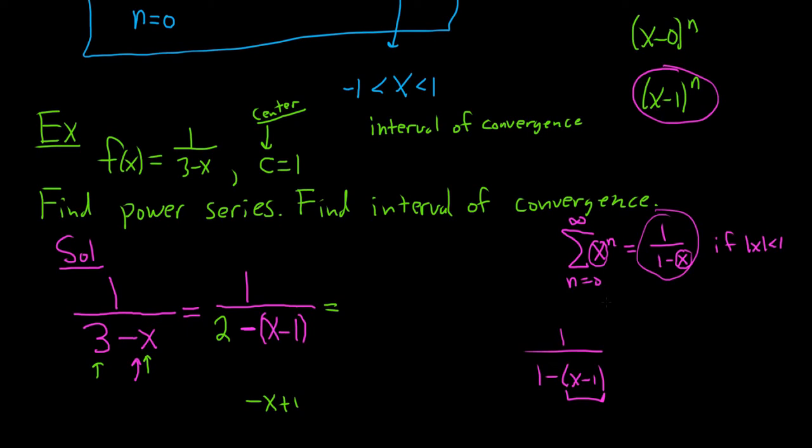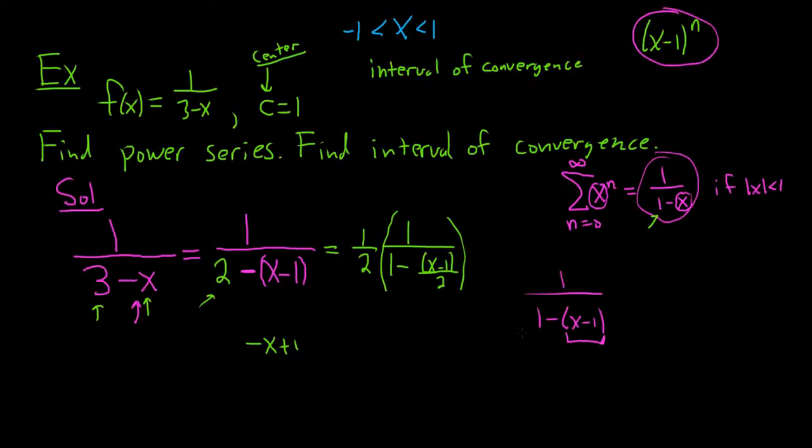So now you'll notice that there's a 2 here. In the formula, we have a 1. So what you do is you pull out the 2 on the bottom. So now you have 1 over 1 minus, and then when you pull out that 2, you get x minus 1 over 2. And so now we're finally in a position where we can use the formula. Let's go ahead and keep going. I'll come back and explain this step again a little bit later.